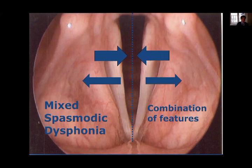You can have mixed spasmodic dysphonia, where you have almost a tug of war between the muscles trying to close the vocal cords and the muscles trying to open them. When we look at someone with mixed SD, we often see features of both, and this is more difficult to diagnose.